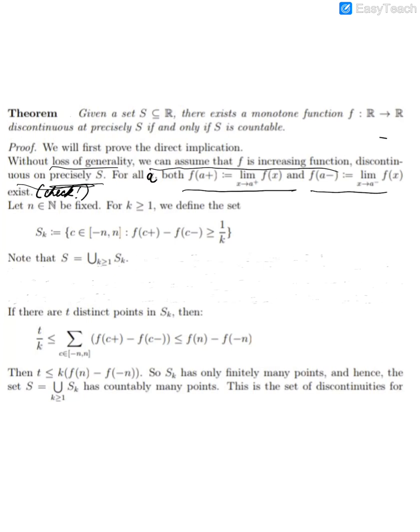Now, let n be a fixed natural number and we define these apparently odd looking sets. We define S_k to be all those c in the interval [-n, n] such that f(c+) - f(c-) ≥ 1/k. One can quickly check that as we have taken f to be increasing, we always have f(c+) ≥ f(c-). Moreover, as both limits exist, f is continuous at c if and only if f(c+) = f(c-). From that we can conclude that the set of discontinuities is the union of these sets S_k as k runs over the natural numbers.